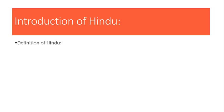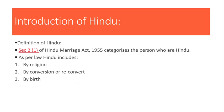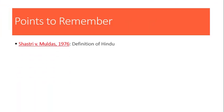In Hindu law, sabse pahle hume ye samajhna hai ki Hindu hai kaon. We will understand the concept from the legal perspective. Section 2 clause 1 of Hindu Marriage Act categorizes the persons who are Hindu. Section 2(1) mein definition di gayi hai ki kin persons ko Hindu kaha ja sakta hai. A very important case regarding the definition of Hindu is Shastri vs. Muldas, in which effort has been made to give a precise definition of Hindu.